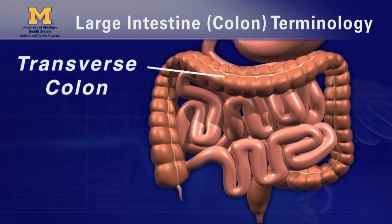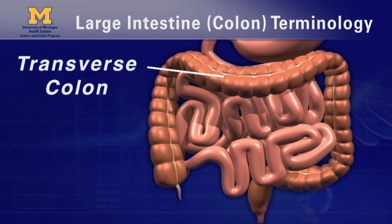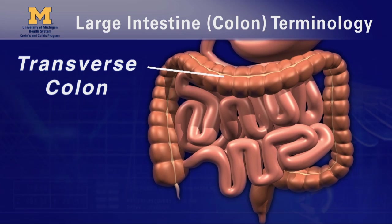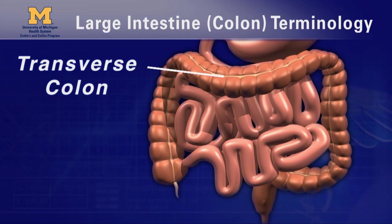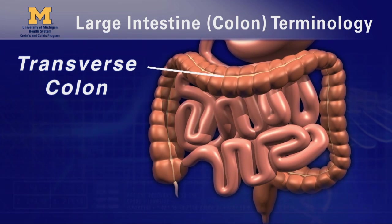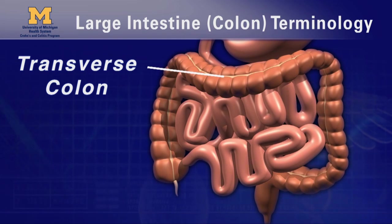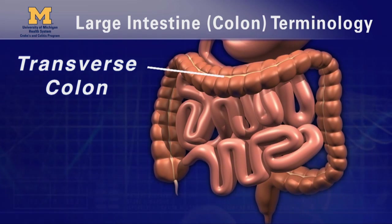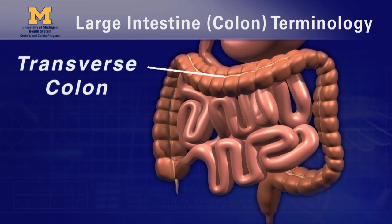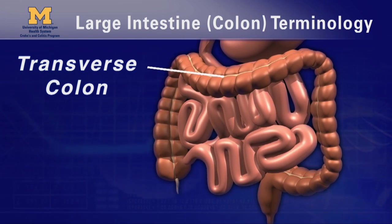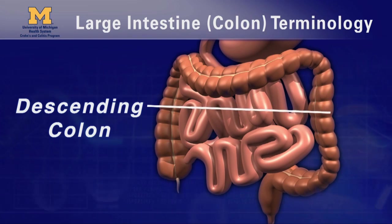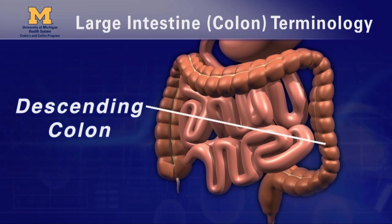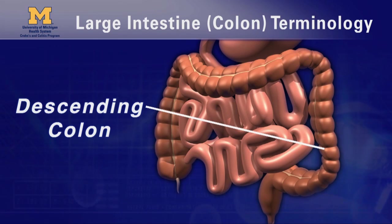Then comes the transverse colon — 'transverse' means across. This part of the colon goes across the abdomen from right to left, and is where stool normally starts to become solid. Then the descending colon, or left colon, descends downwards on the left-hand side of the abdomen.